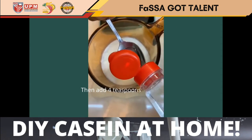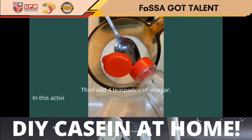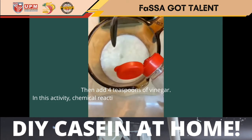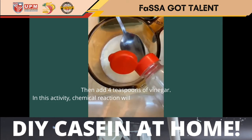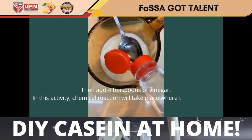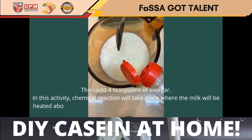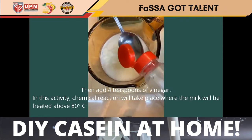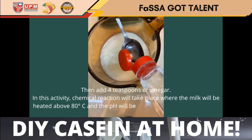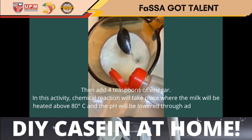Then, add 40 teaspoons of vinegar. In this activity, a chemical reaction will take place where the milk will be heated above 80 degrees Celsius and the pH will be lowered through adding white vinegar as an acid.